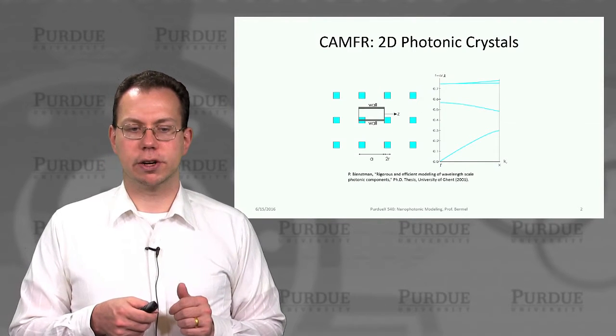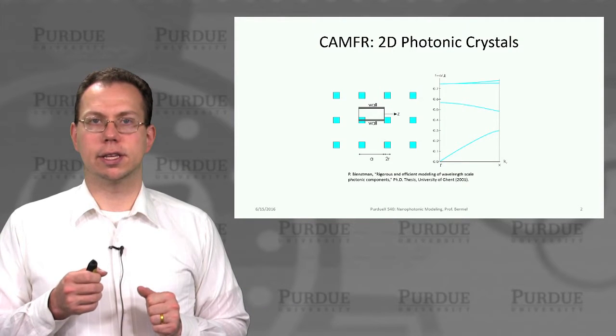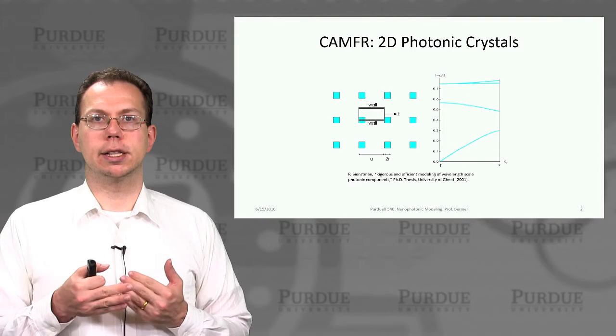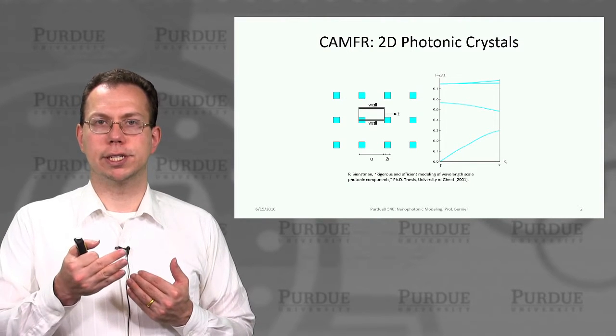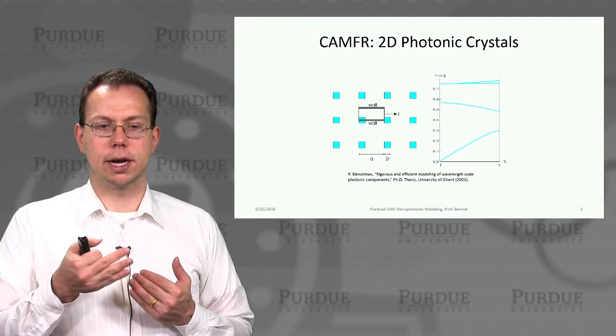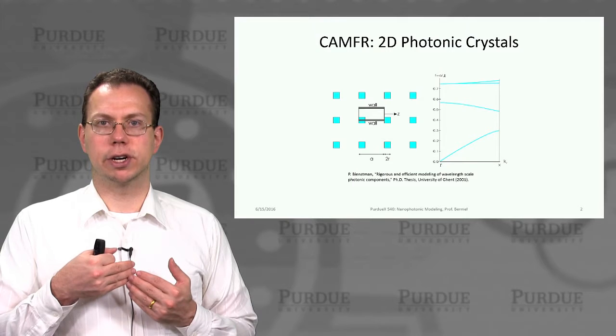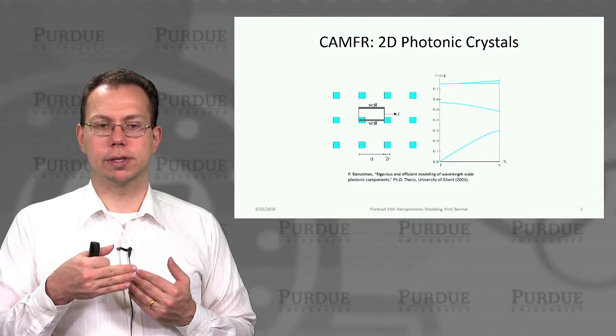In this particular example we're using CAMFR to calculate the band structure of a 2D photonic crystal based on the concept that you can perform a singular value decomposition of repeated periodic structure and then easily invert the matrix in order to extract the eigenmodes of the system.